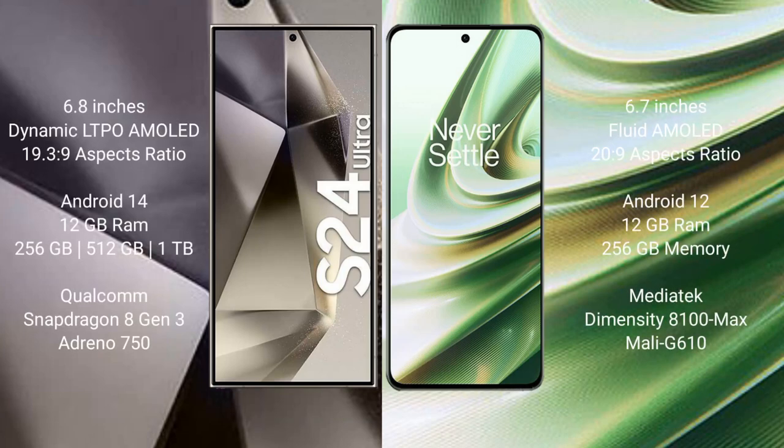Samsung Galaxy S24 Ultra comes with a 6.8-inch Dynamic LTPO AMOLED display and aspect ratio 19:30:9. OnePlus 10R comes with a 6.7-inch flat AMOLED display and aspect ratio 20:30:9.